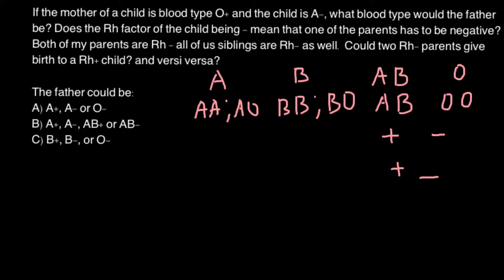For example, one parent can be heterozygous for the Rh factor, meaning they have two chromosomes. All chromosomes come in pairs, so we have 23 pairs of chromosomes. The Rh factor gene can be present on one chromosome of a pair and absent on the other. There are some genes that can be present in one copy and absent in the other copy.